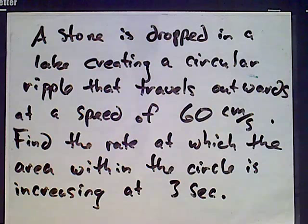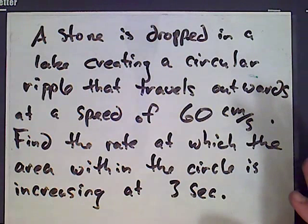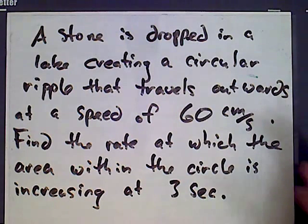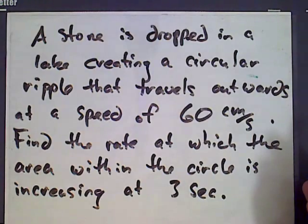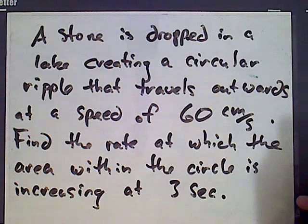What we have here, a stone is dropped. Circular ripples are created traveling outwards at a certain speed. There's an area at a given time within the circle formed by the ripple. And that area is changing in time. It's getting bigger. We want to find out at what rate that area is changing three seconds after the stone is dropped.